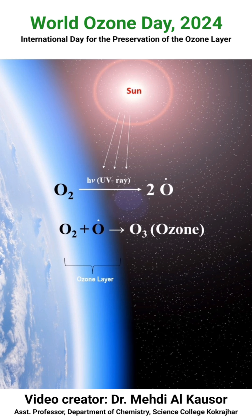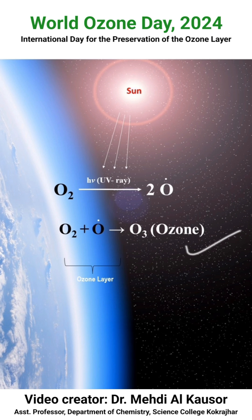The ozone layer is formed naturally in the stratosphere where ultraviolet radiation from the sun interacts with oxygen molecules. It is a two-step process. In the first step, the ultraviolet light from sunlight breaks apart an oxygen molecule into two oxygen atoms. In the second step, each oxygen atom binds with another oxygen molecule to form an ozone molecule. This is how ozone gas is formed in this region of the atmosphere.